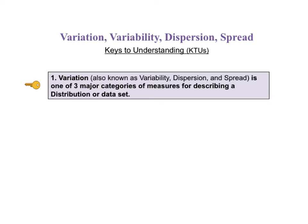For this video, there are three keys to understanding. The first KTU tells us that variation — which is also known as variability, dispersion, and spread — is one of three major categories of measures for describing a distribution or data set.